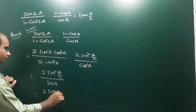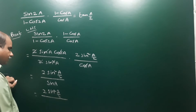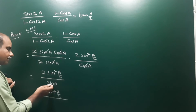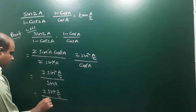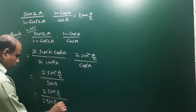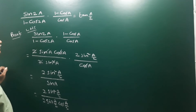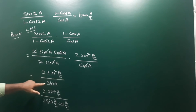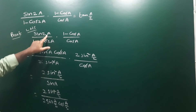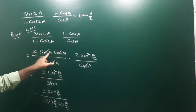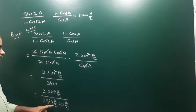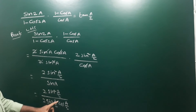For sin a, we write the submultiple formula: sin a equals 2 sin(a/2) cos(a/2). So the expression becomes 2 sin²(a/2) divided by 2 sin(a/2) cos(a/2).